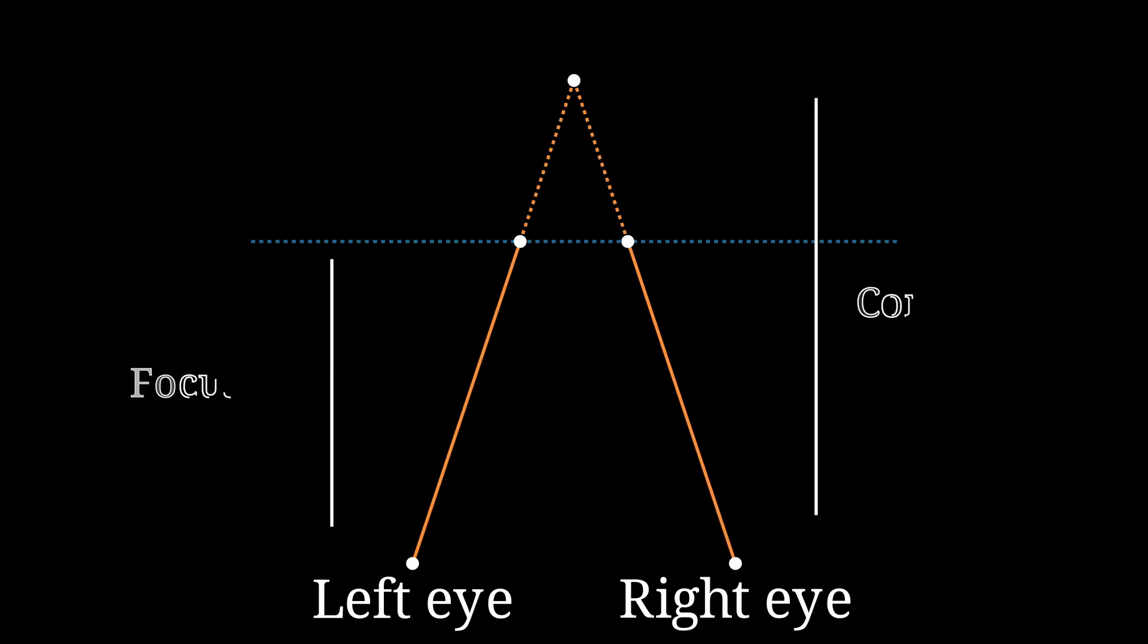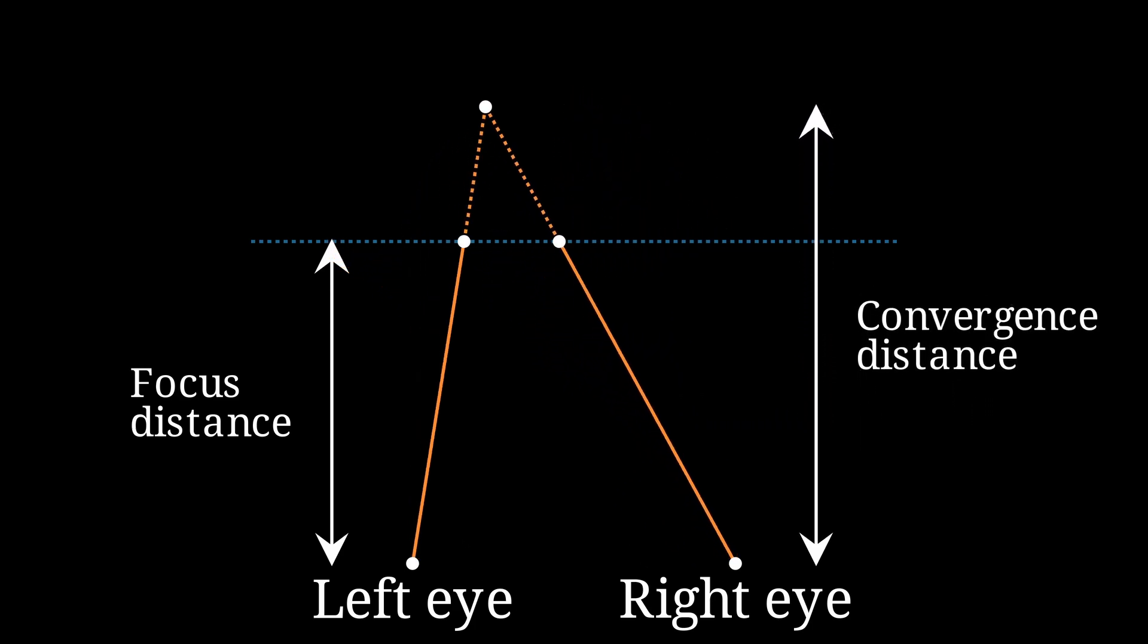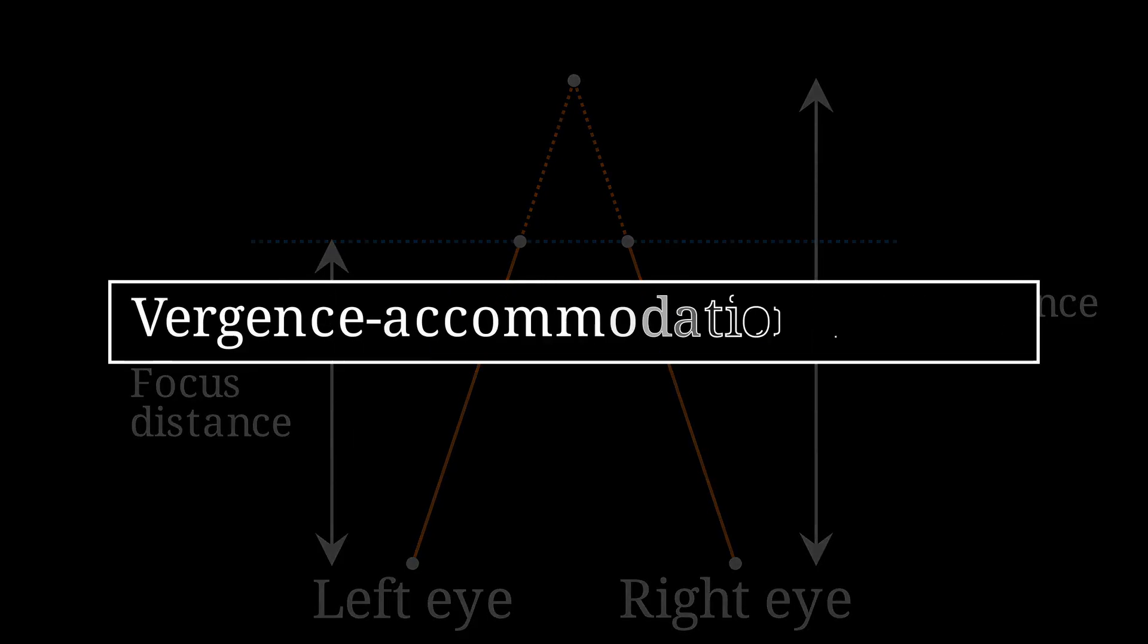It's also worth noting that all of these illusions only affect binocular depth perception. In all of them, your eyes remain focused at the same distance, even when they're converging on different distances. This discrepancy, called vergence-accommodation conflict, means your brain is getting two conflicting messages about the distance to an object. For most people that's not a big issue, but for some people it can cause eye strain and disorientation, and it's probably not a good idea to spend too much time in that condition.